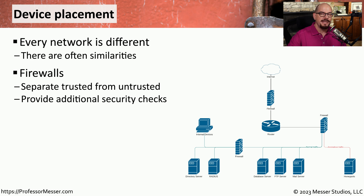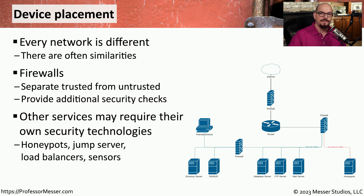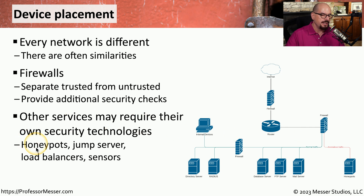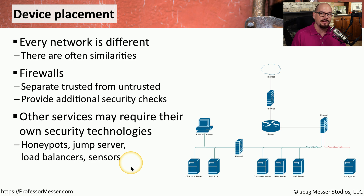Firewalls can help us keep attackers on the outside of our network while allowing legitimate traffic to pass through. But the firewall is not the only security technology we might use. There are other devices that either include their own security or can help with the overall security architecture — devices such as honeypots, jump servers, sensors on the network, and load balancers can help create a more secure computing environment.